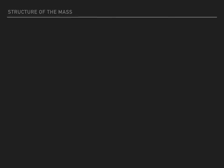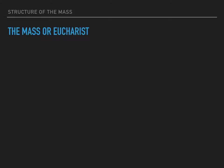We're continuing with the structure of the Mass. The Mass, or the Eucharist — it can be called either — contains two main parts with accompanying rites. The two main parts are the Word and the Sacrament.